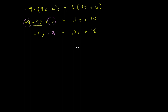Now we want to group all of the x terms on one side of the equation and all the constant terms on the other side. I like to have my x terms on the left-hand side. So to get rid of this 12x from the right, the best way is to subtract 12x from both sides of the equation.